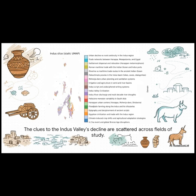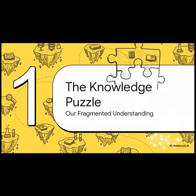We've got clues from climate science telling us about ancient droughts. We have archaeology showing us how settlement patterns changed. We've got historical records about shifting trade routes. Each clue is like a single piece of a giant thousand-piece jigsaw puzzle. And that gets us right to the heart of the problem — what you could call the knowledge puzzle. We have more information available today than at any point in human history, but it's all fragmented, locked away in different scientific papers, separate databases, and countless books.